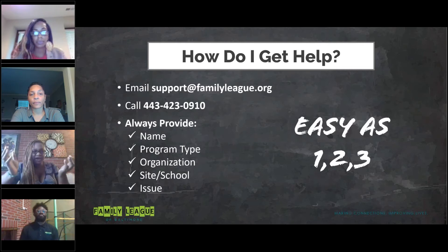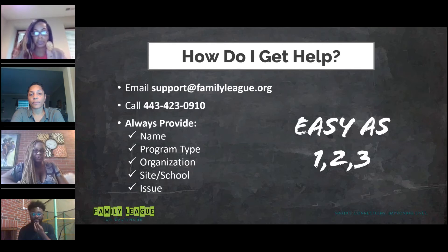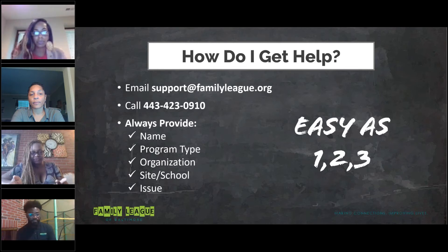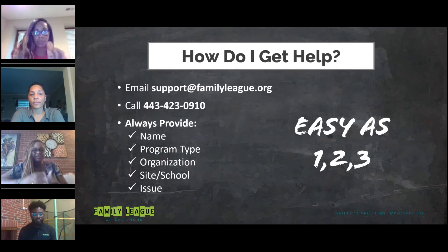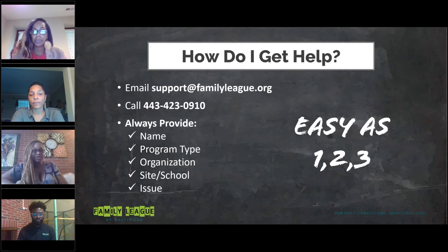So how do you get help? You're in Funding Track, something's not appearing as it should, or maybe you need your password reset — any multitude of issues. You want to send an email to support@family.org. That creates a ticket that I can respond to. You can also call us at area code 443-423-0910. That also creates a ticket — it grabs the audio from your voicemail and creates a ticket for us as well. Whether you choose email or calling, you always want to provide your name, your program type, your organization, your site or school if related to the issue, and a description of the actual issue so we can get to work.